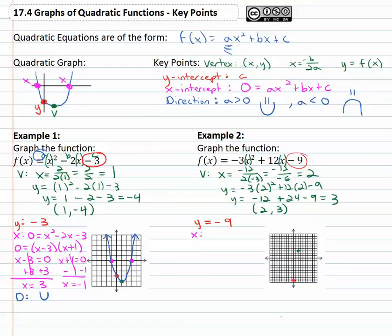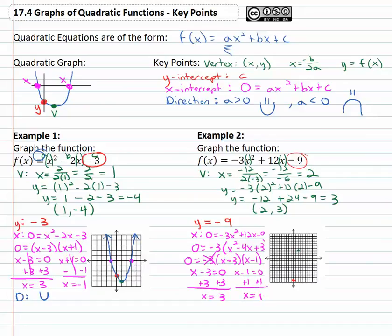The x intercept, we make the equation equal zero. Zero equals negative 3x squared plus 12x minus 9. You might notice there's a common factor of negative 3, giving us x squared minus 4x plus 3, which is negative 3 times x minus 3 times x minus 1. And we can set each factor equal to zero. We don't need the negative 3 out front because there's no variable there. Add 3 to both sides and x equals 3. Add 1 to both sides and x equals 1. We've got our vertex, it's really skinny on here, but at 1 and 3.